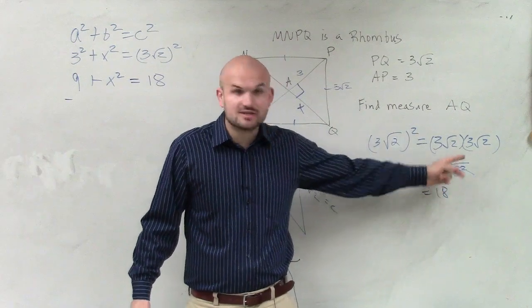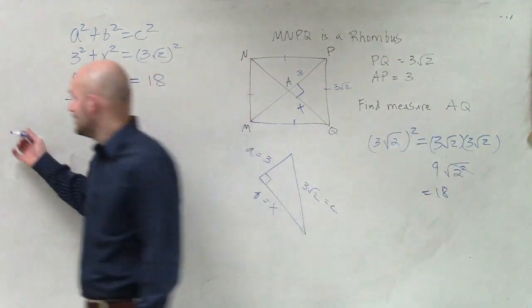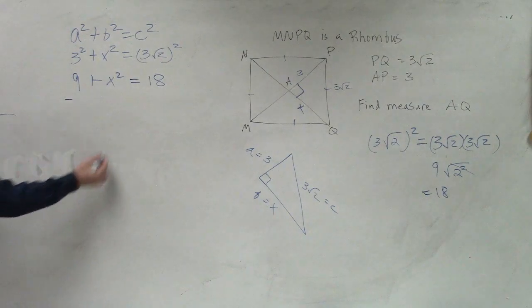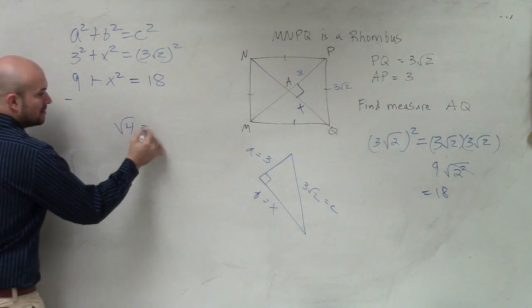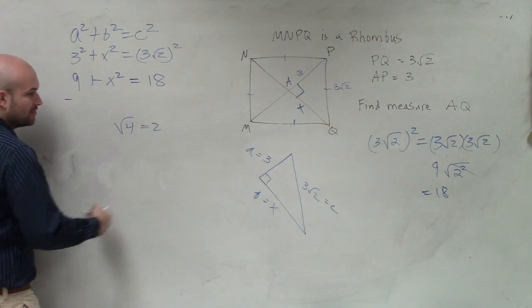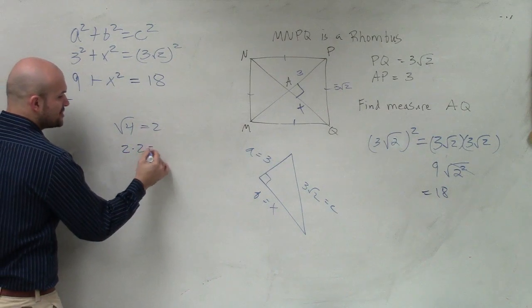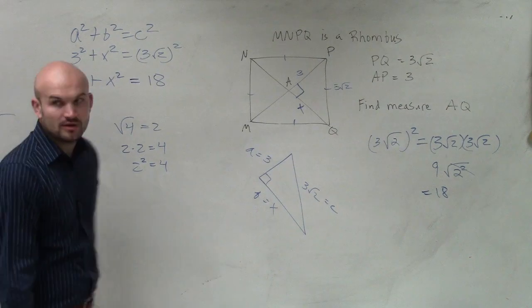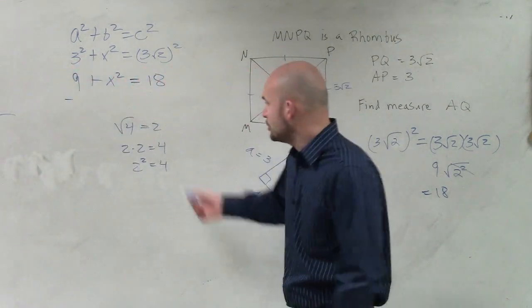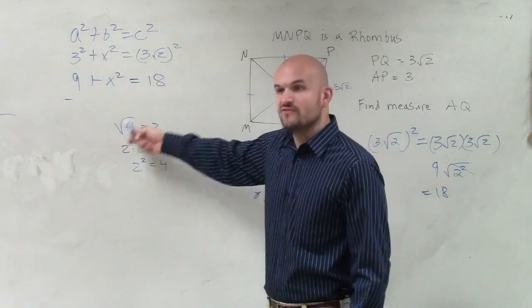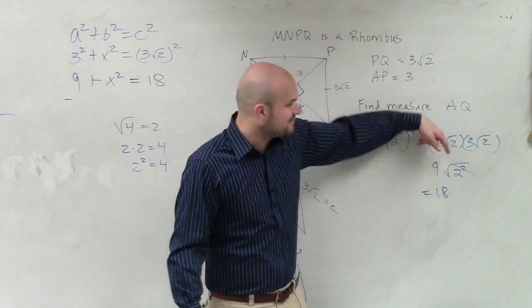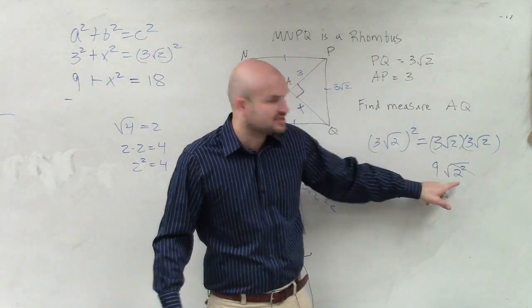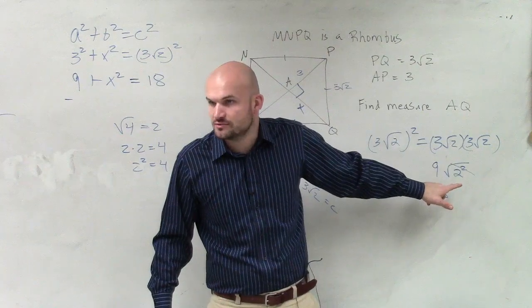And then the square root and squaring, those are opposite of each other. Like, what's the square root of 4? 2. Why is it equal to 2? Because 2 times 2 equals 4, or 2 squared equals 4. Those are opposite of each other. 2 squared equals 4, square root of 4 equals 2. Those are opposite operations. So if I have the square root of something squared, that's just going to equal my radicand, which will be 2.